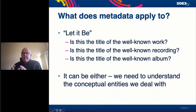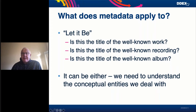Let's look at a little bit of ambiguity. The string of letters that spell out 'Let It Be' immediately — for those of us of a certain age — conjures up the work 'Let It Be' by The Beatles. However, it is also a recording, so the same title applies to the individual recording as well as the musical work. And taking it one step further, there is of course the album 'Let It Be.' So which of those entities is that string of letters actually describing or identifying? Because it could be any one of those three, our work is to make sure it is absolutely clear when that information is communicated to a business partner.